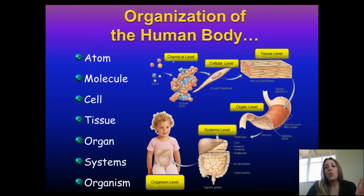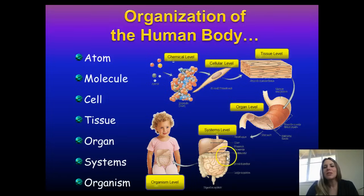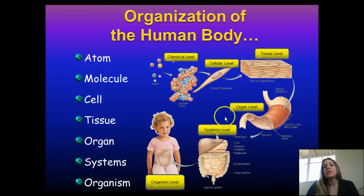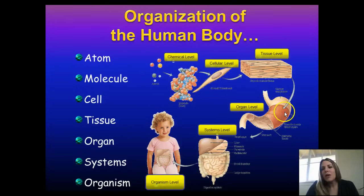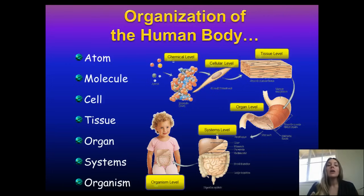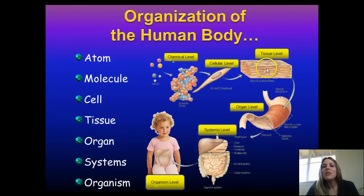Those organ systems are made up of the organs themselves. Her digestive system includes the small intestine, large intestine, liver, and stomach. If you look at a particular organ — like the stomach — you'll see it is made up of a collection of cells called tissues. Here is the tissue level, made up of individual cellular components, each with a nucleus.